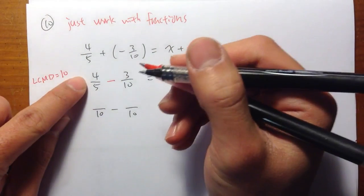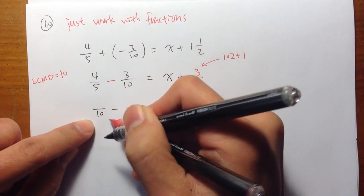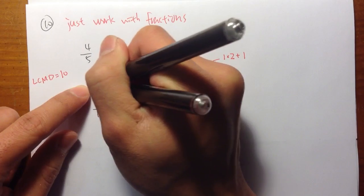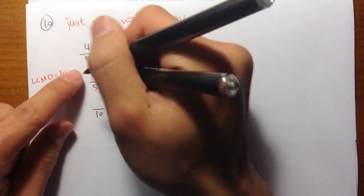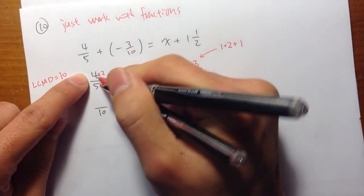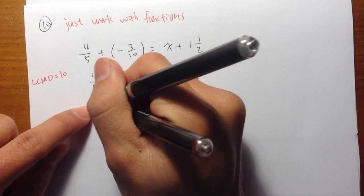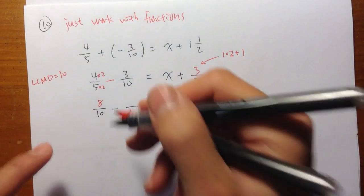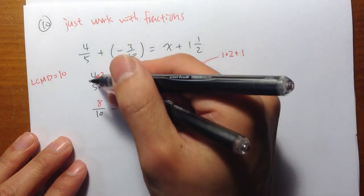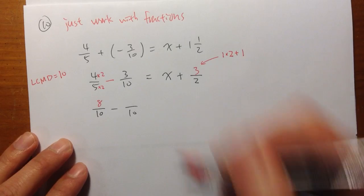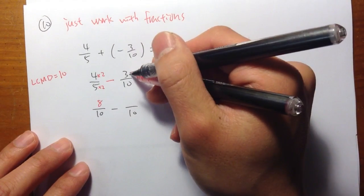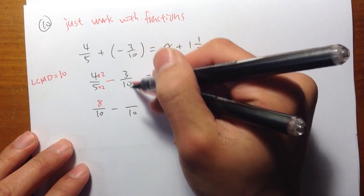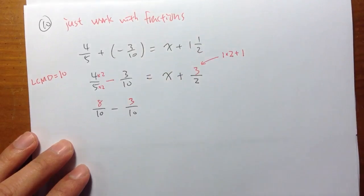So for the first fraction, let's take a look. 5 times what will be 10? 5 times 2 will be 10. And I need to do the same on the top. So 4 times 2 is equal to 8. So that's the new look. This is the new look of 4 over 5. And for the second fraction, it's already something over 10, right? I have this 3 over 10 already. So I have this 3 right here. Just bring it down.